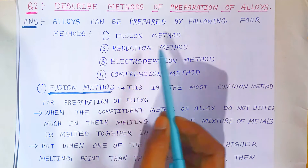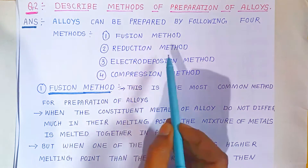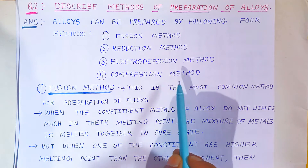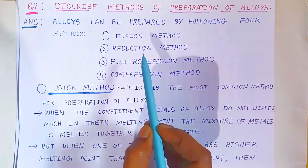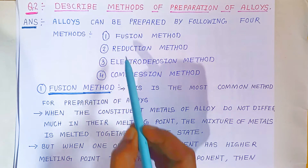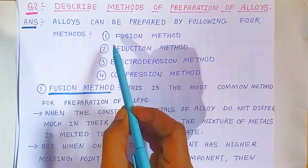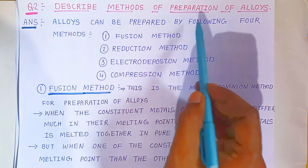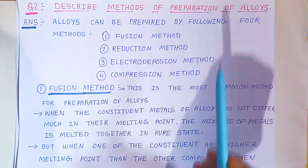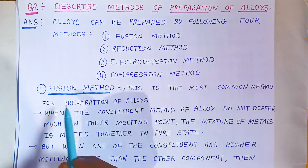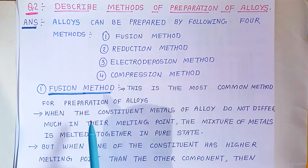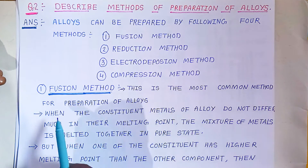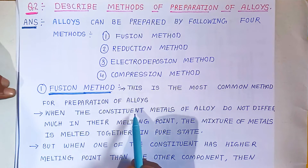The four methods are: first, fusion method; second, reduction method; third, electro deposition method; and fourth, compression method. The fusion method is the most common method for preparation of alloys.